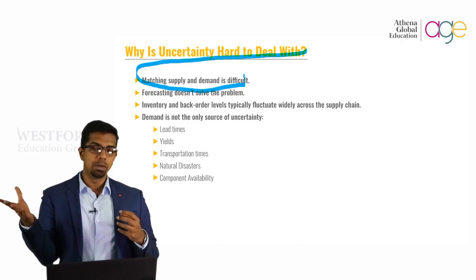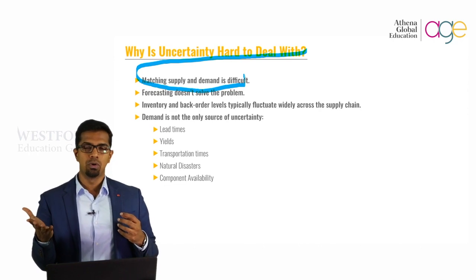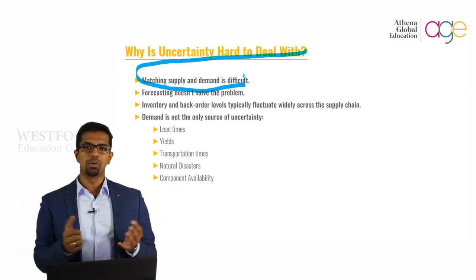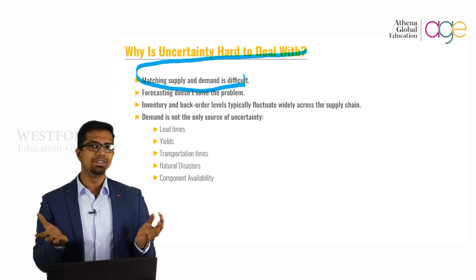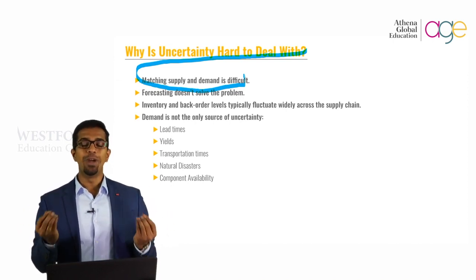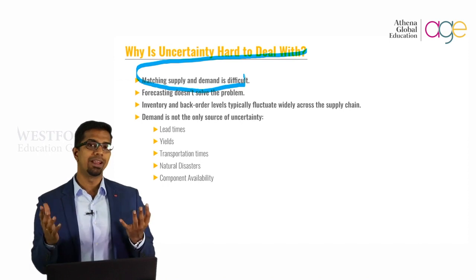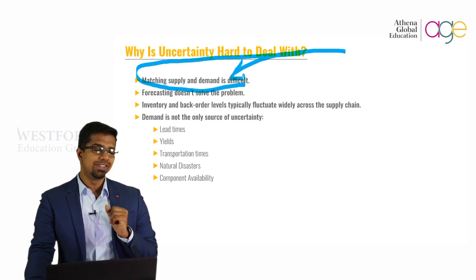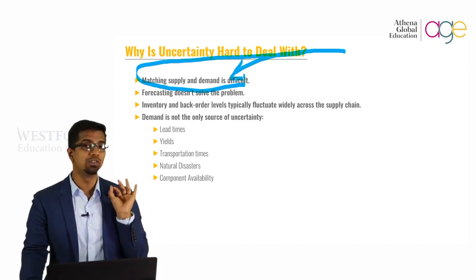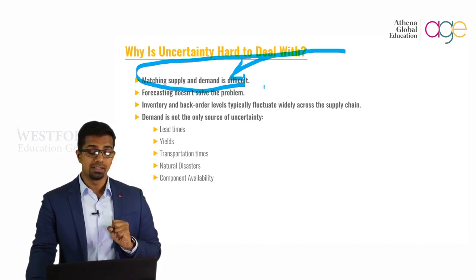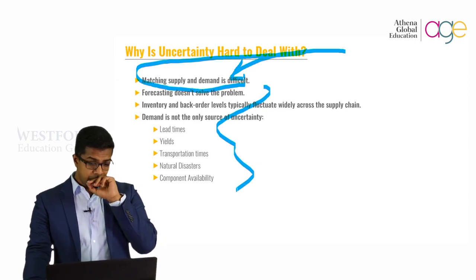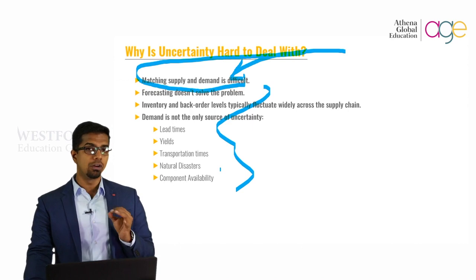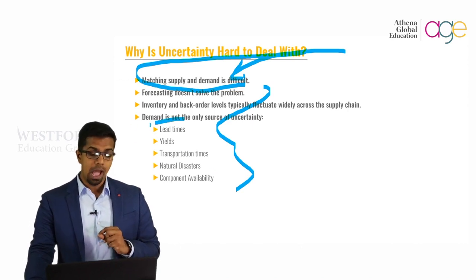Some people might think they don't like mangoes today. That's what happens in terms of variation — you have your supply and demand, and as mentioned, you can never match demand and supply perfectly. It's impossible to match them, and this is also one of the main reasons why it's really hard to deal with uncertainty.